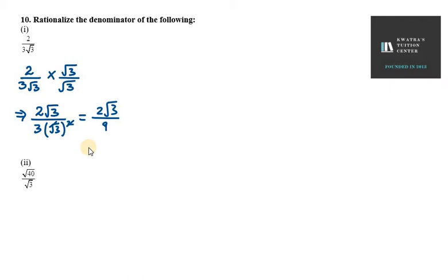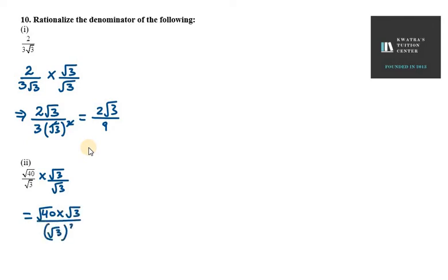It is under root 40 over under root 3. Here we have to rationalize the denominator. What you have to do is multiply and divide by under root 3. You will get under root 40 into under root 3 over under root 3 square. Square and under root cancel. You will get under root 120 over 3.